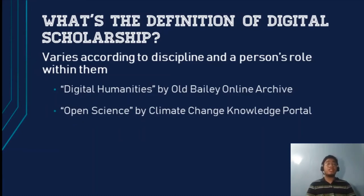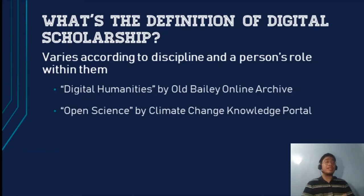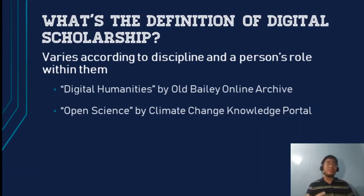Digital scholarship will vary in its contents across fields. What makes it digital scholarship are its components: digital content, network distribution, and open access. The same applies to Open Science — for example, the Climate Change Knowledge Portal. It's digital, accessible online, created through social networks, and is a repository of real-time data about the climate, aimed at climate change skeptics.